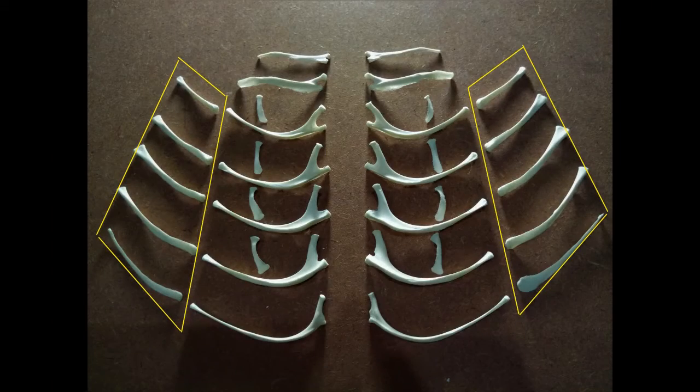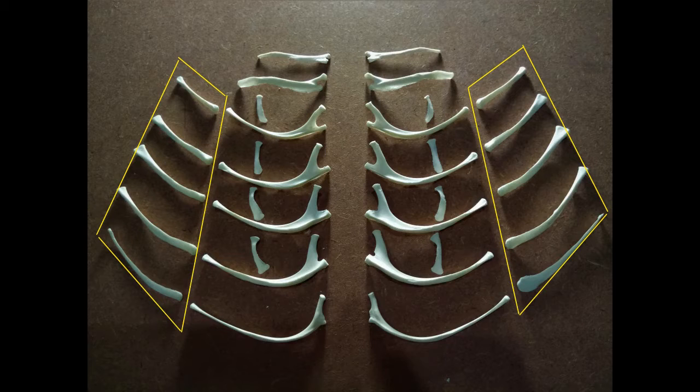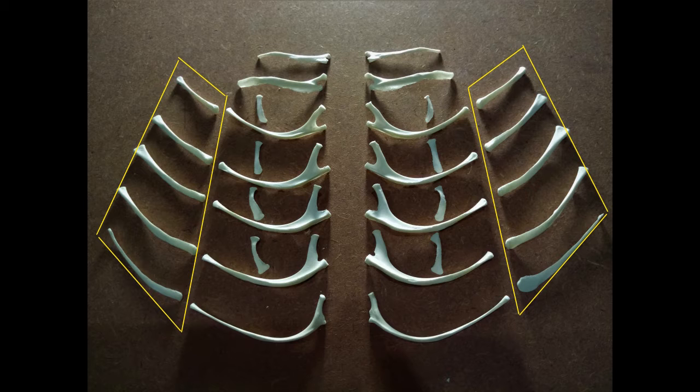The sternal ribs are arranged in ascending order of length. The shortest comes first and the longest is last. However, the last two sternal ribs are more or less equal in length, but a closer inspection reveals that one end of the last rib that joins with the thoracic rib is flattened and rounded.